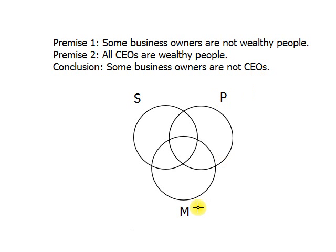What about the remaining term? As always, the middle term is the term that occurs in both premises but not in the conclusion. In this case, it would be wealthy people.